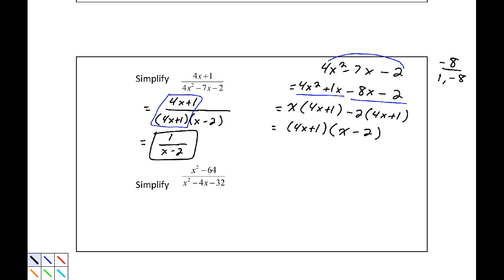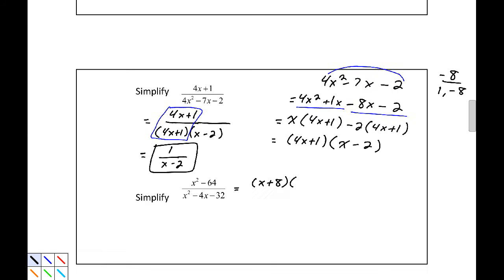Our second example, we have simplify. Our numerator is x squared minus 64, our denominator is x squared minus 4x minus 32. Now the numerator factors as a difference of squares, so it will be x plus 8 in parentheses multiplied by x minus 8.